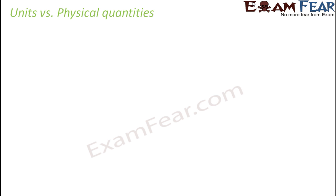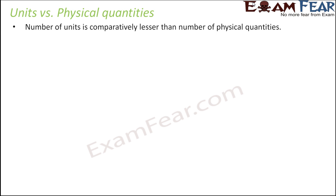When we talk about units, every physical quantity needs some unit to get measured. But when we compare the number of units with the number of physical quantities, we see that the number of units is comparatively lesser. If there are 10 physical quantities, there exist fewer than 10 units for those quantities. That means it is not necessary that every physical quantity should have a unique new unit — many times, two or more existing units combine together to form a unit of some other physical quantity.